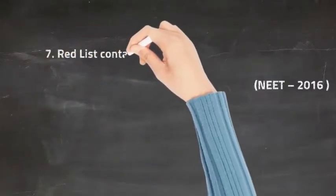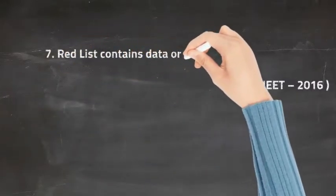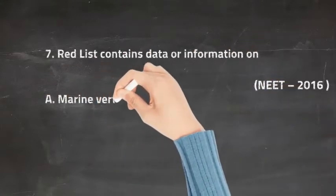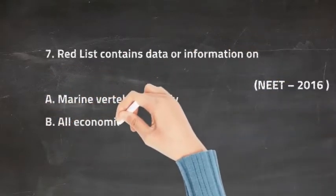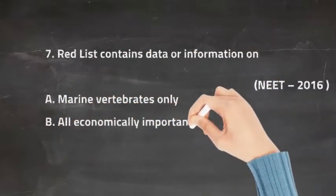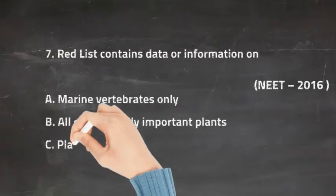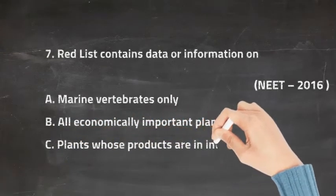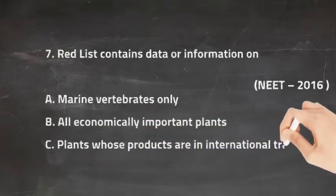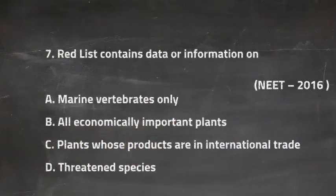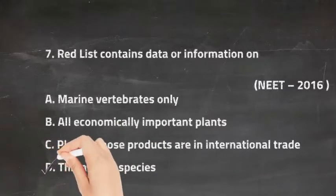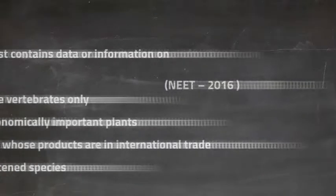Q7: Red list contains data or information on — Option A Marine Vertebrates Only, Option B All Economically Important Plants, Option C Plants Whose Products Are in International Trade, and Option D Threatened Species. The right answer is Option D, Threatened Species.